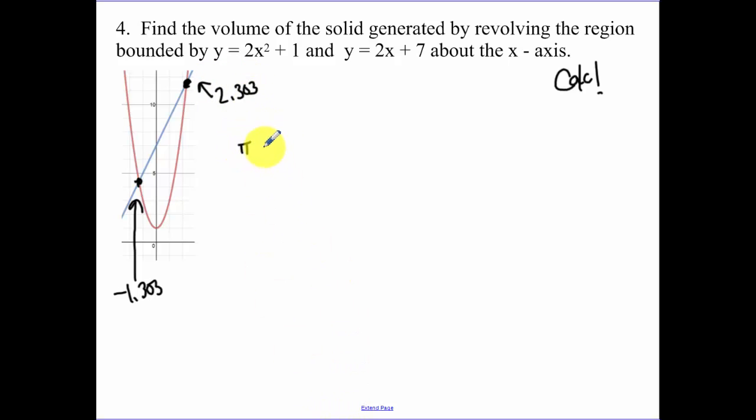So we're going to take pi, the integral, from negative 1.303 to 2.303. Remember we're doing washers because it's not attached to the x-axis. So I'm going to have one function squared minus another function squared, dx. You have to square the two functions individually. Now which function is farther away? The function that's farthest away is our 2x plus 7. And then the function that's closer to our x-axis is going to be the function 2x squared plus 1.